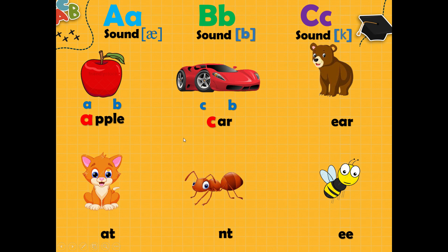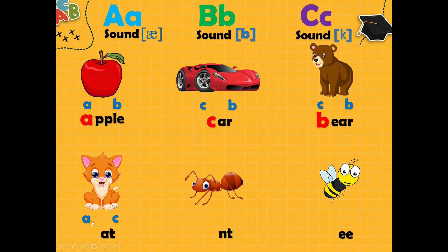Now we must find the first letter in the word. For example, word apple starts from A, not from B — from A. Car starts from C, not from B. Let's try: bear — C or B? Bear starts from B. Yes, good. Next, cat. What letter must be here? Let's check. C. Yes, cat. Next, word ant. A or C must be here. Let's check. Yes, A. Good. And last, word ball. Starts from B or C? Let's check. B. Excellent.